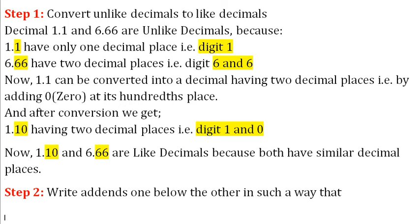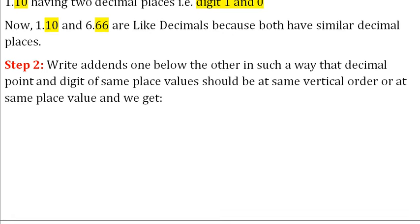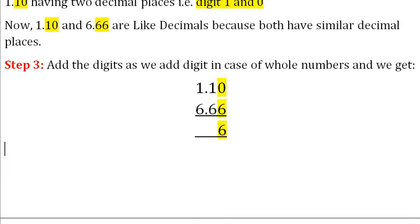Step 2: Write the addends one below the other so that the decimal point and digits of the same place value are at the same vertical order. Step 3: Add the digits as we add whole numbers — 0 plus 6 is equal to 6, 1 plus 6 is equal to 7, and 1 plus 6 is equal to 7.